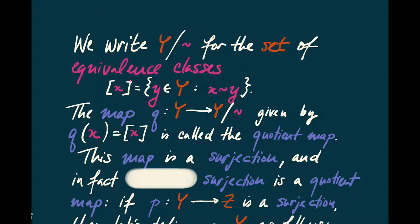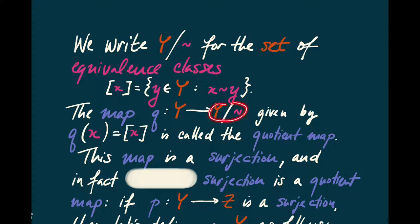Once you have an equivalence relation, you can look at the set of equivalence classes, normally denoted with square brackets — these are the set of elements of Y related to X under the equivalence relation. We call the set of all of these Y mod tilde. We can construct a map Q from Y to Y mod tilde, sending a point X to its equivalence class. This is called the quotient map, and it's always a surjection.